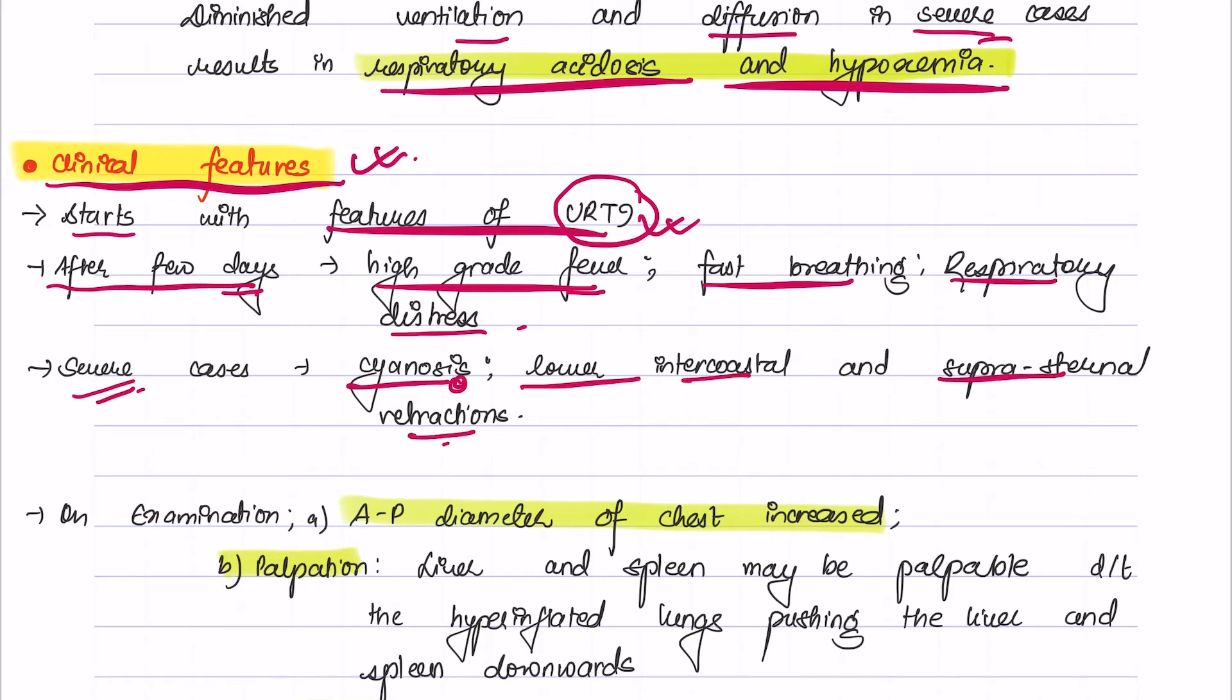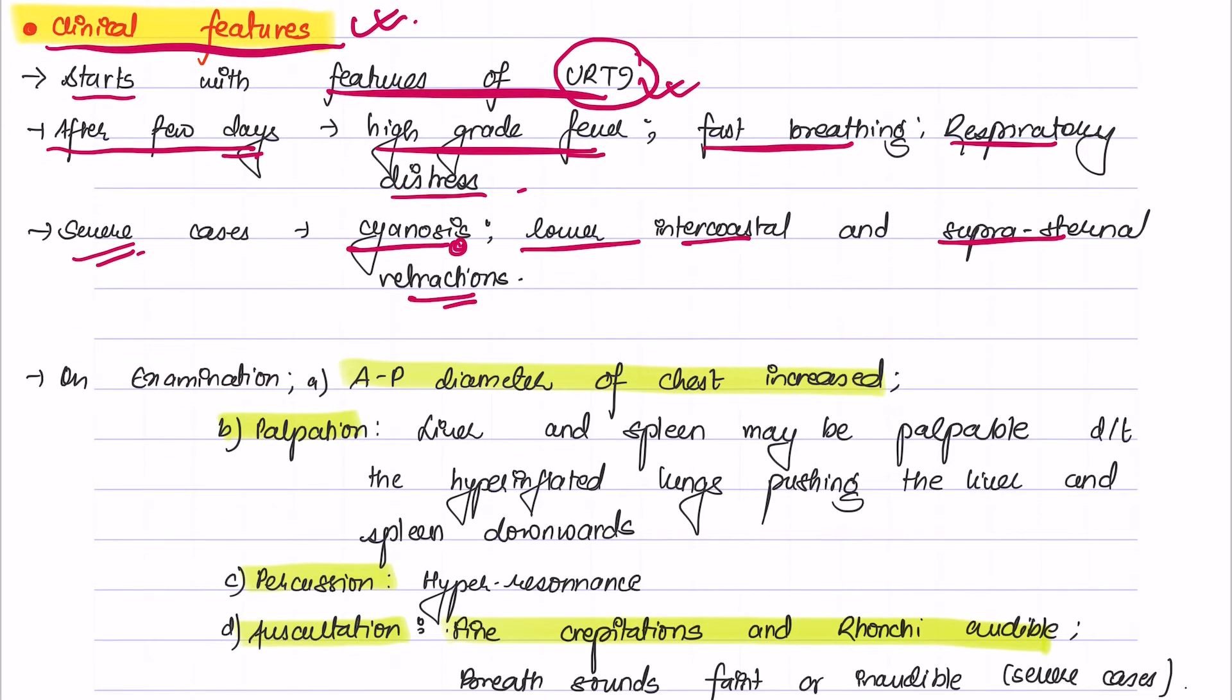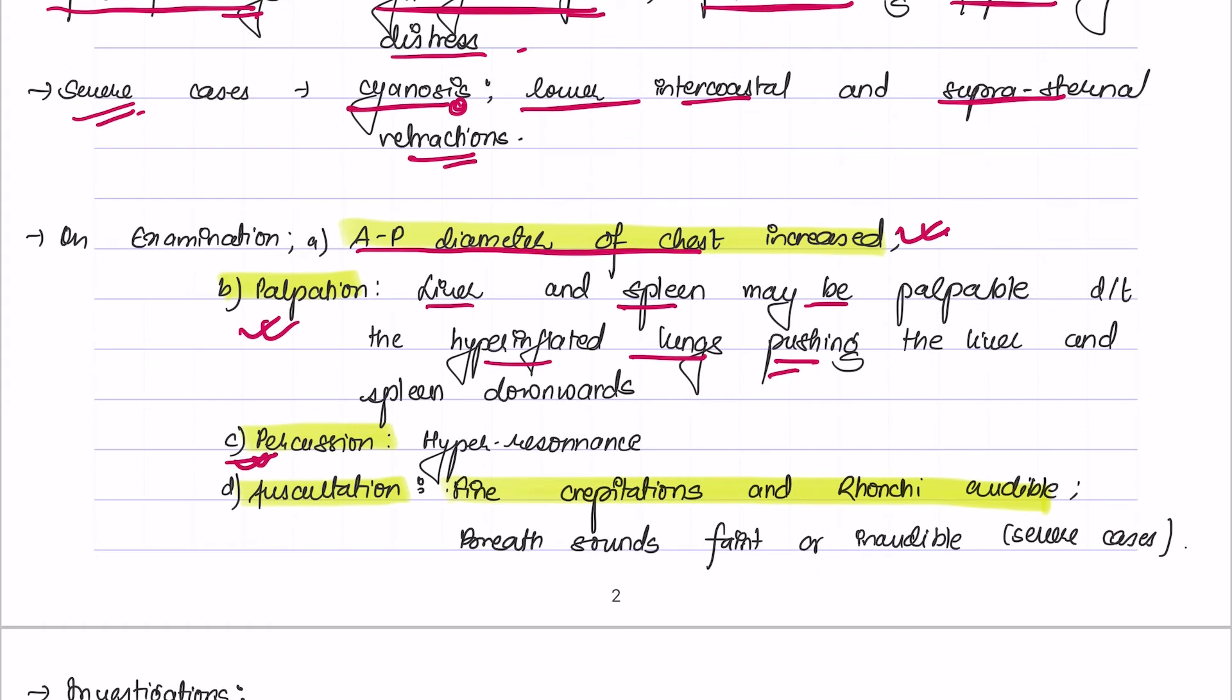On examination, the anteroposterior diameter of the chest is increased. On palpation, the liver and spleen may be palpable as they are pushed downwards due to hyperinflated lungs. On percussion, hyperresonant sound will be heard, and on auscultation, fine crepitations and ronchi are audible. In severe cases, the breath sounds may be faint or inaudible.